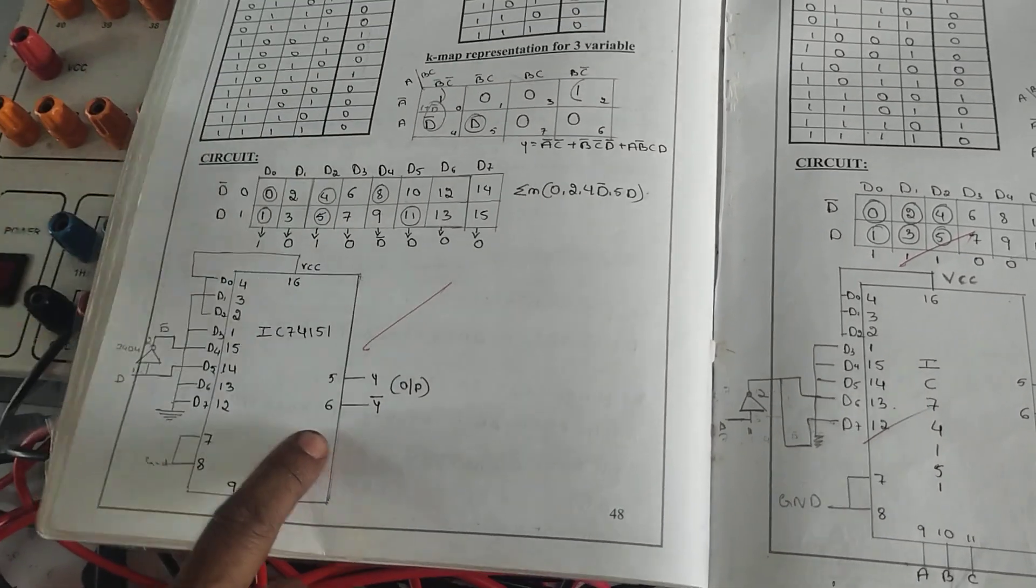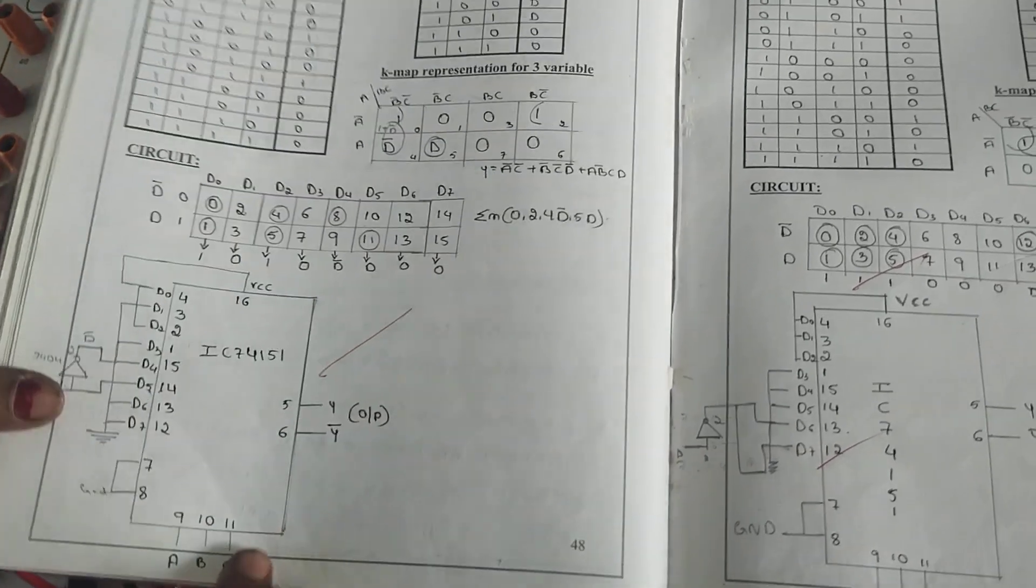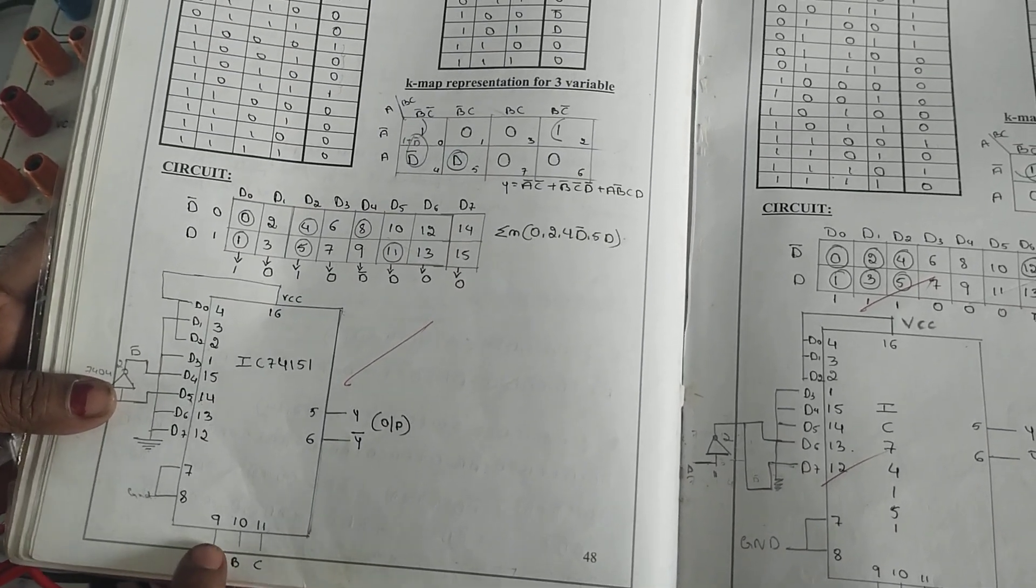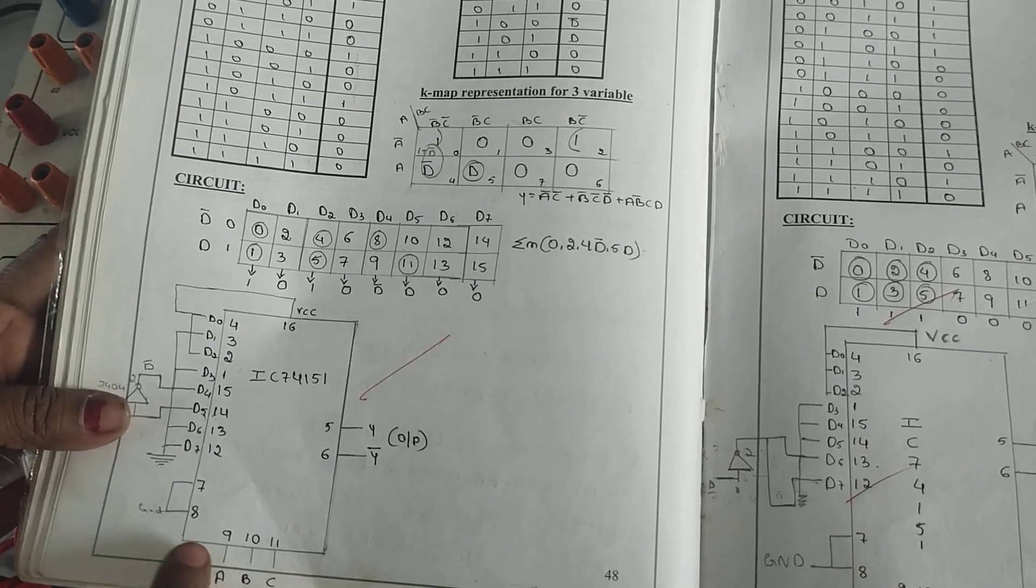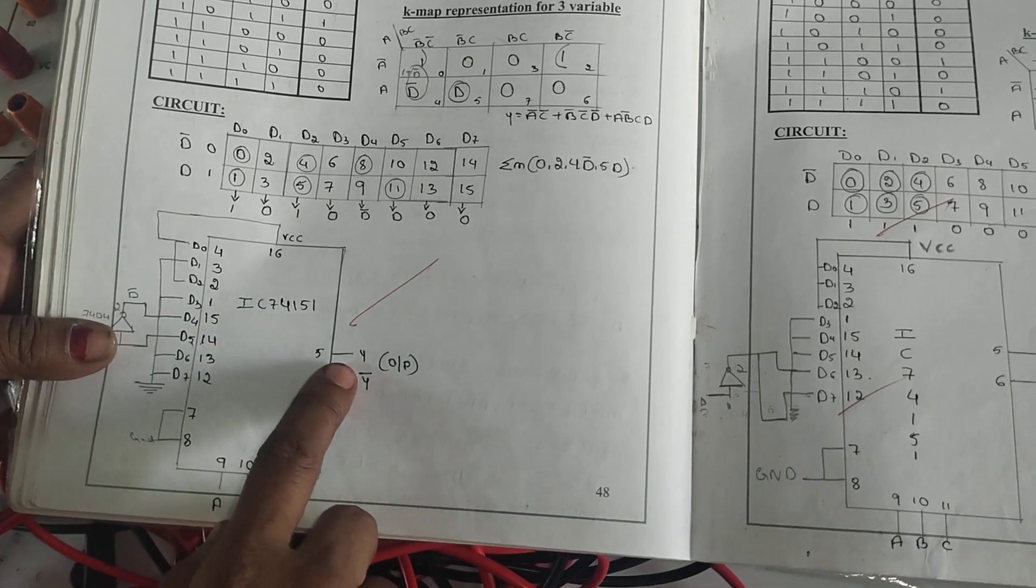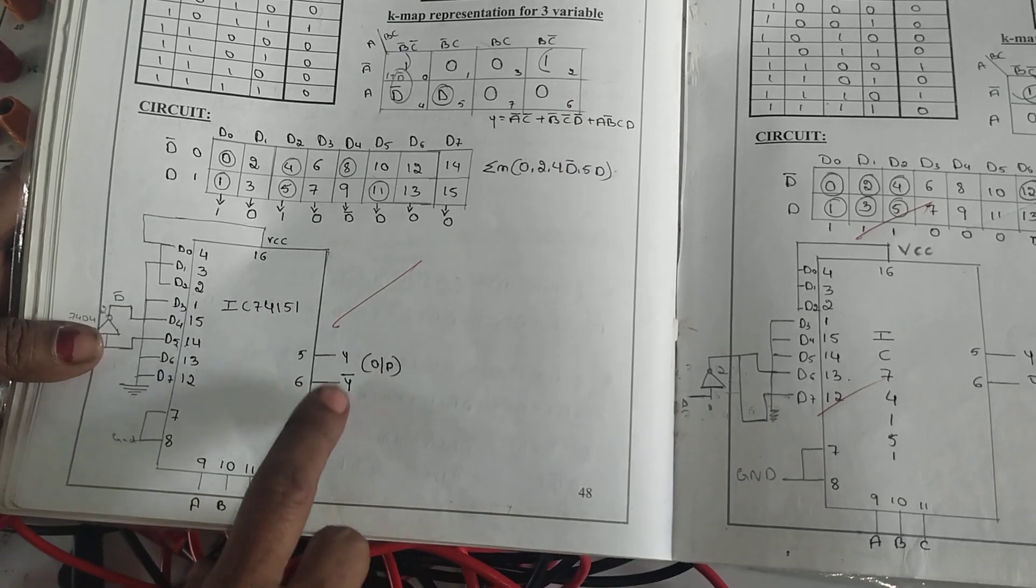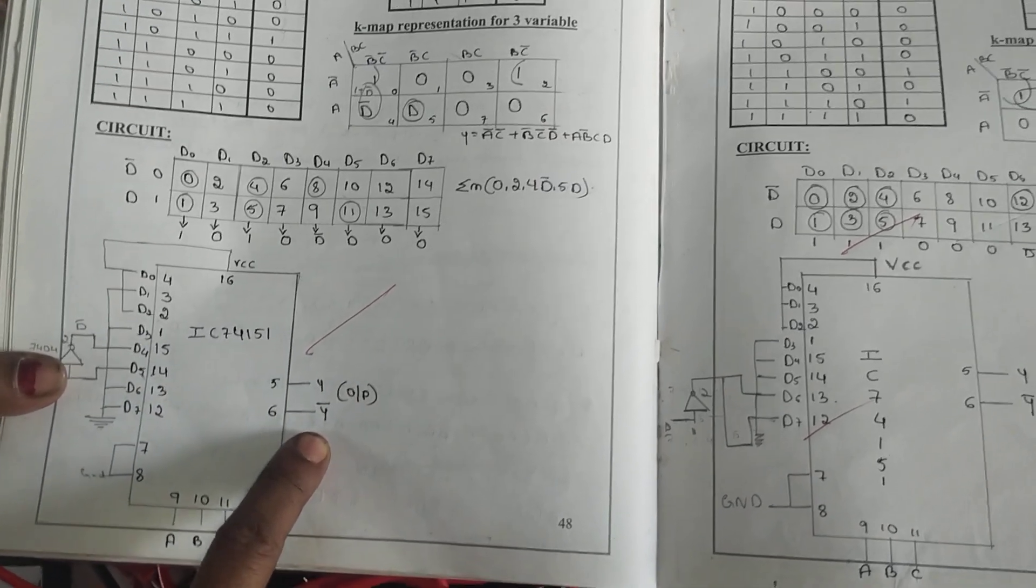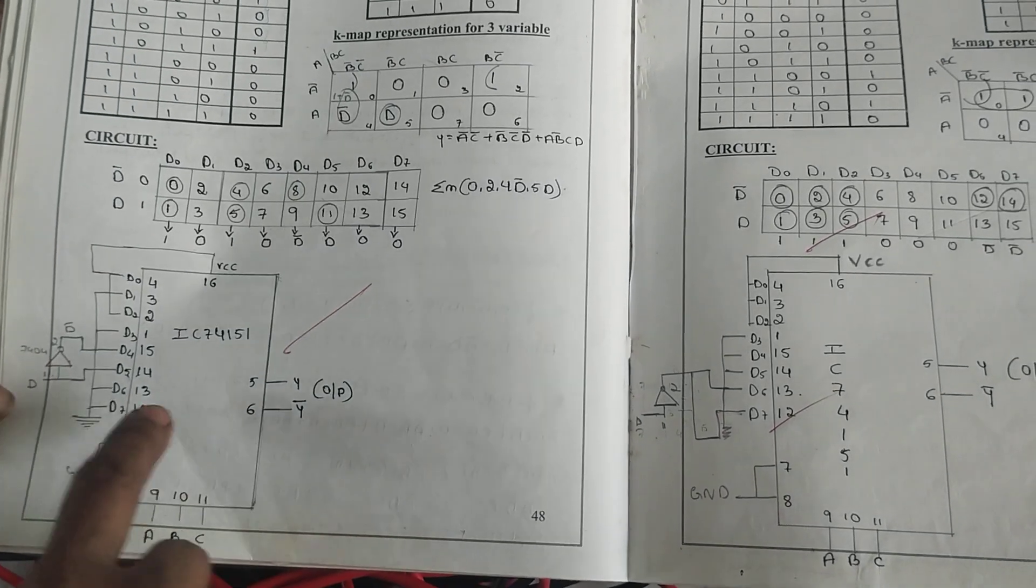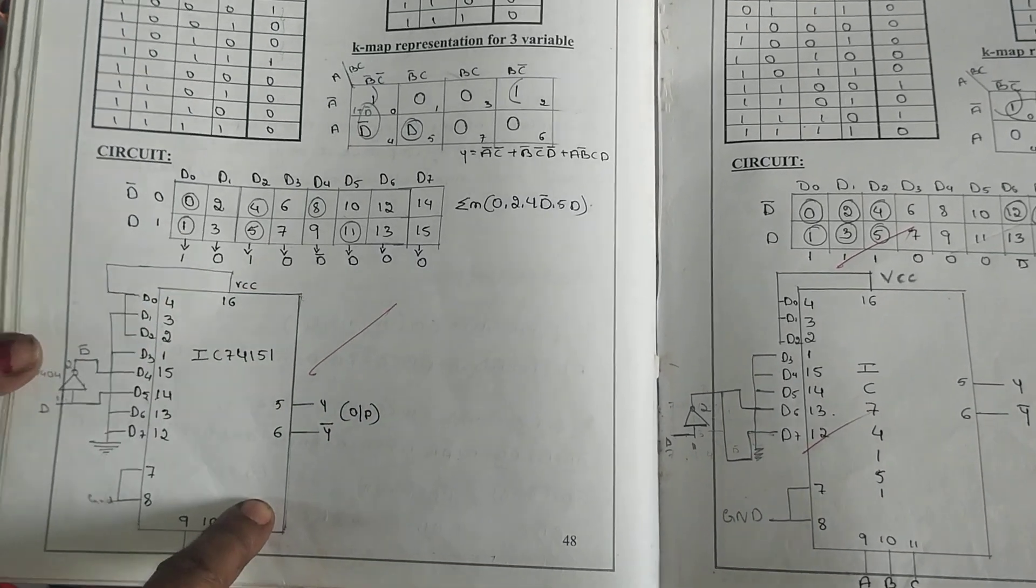The strobe is connected to the ground also. Then whenever we have an 8-to-1 multiplexer, we need 3 select lines: A, B, C are the select lines. That will be connected to pin numbers 9, 10, 11. And one ground and one VCC and remaining are outputs. We have a Y output; Y bar is also represented in output. If you want Y bar, otherwise not required.